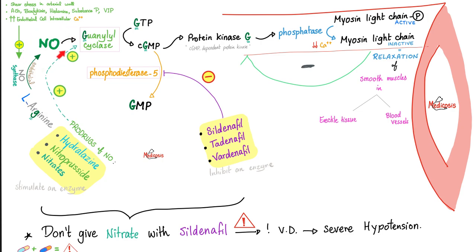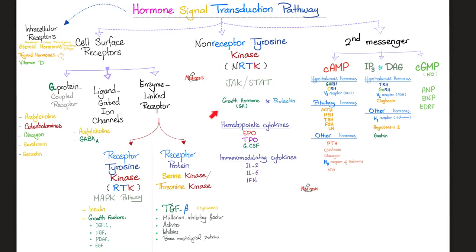Nitric oxide activates guanylate cyclase to convert GTP into cyclic GMP, activating protein kinase G, which activates myosin light chain phosphatase. This converts myosin light chain phosphate back to myosin light chain — from active to inactive, from contracted to relaxed. You get relaxation of smooth muscles in blood vessels and erectile tissue. This is how Viagra and Cialis work.